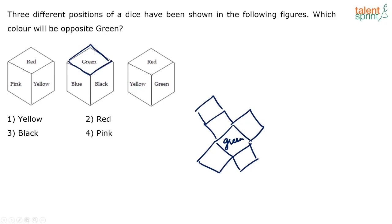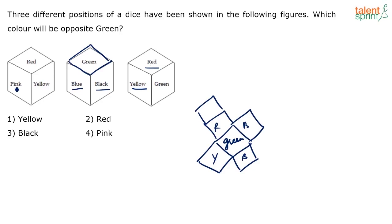From the figures, you can see green is adjacent to yellow and red in one view, and adjacent to blue and black in the other. So the four adjacent sides of green are yellow, red, blue, and black. The only remaining face is pink. Since pink is not adjacent to green, pink must be opposite to green. The answer is option 4.